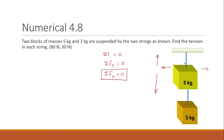Since the suspended weights are in equilibrium, for the first string the tension T1 is acting in the upward direction, the weight of the 5 kg block W1 is acting downward, and the weight of the 3 kg block W2 is also acting downward. So for string one: T1 (upward) minus W1 minus W2 equals zero.